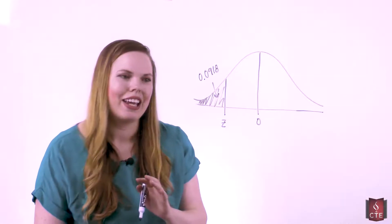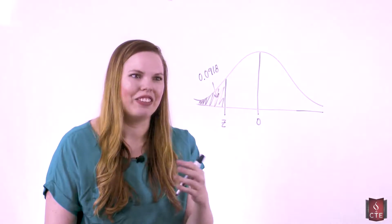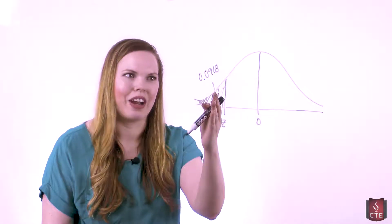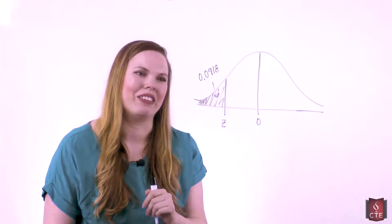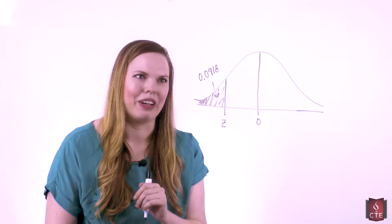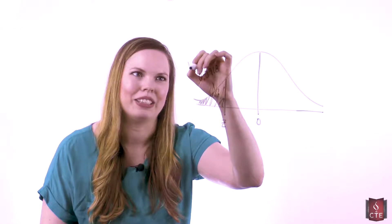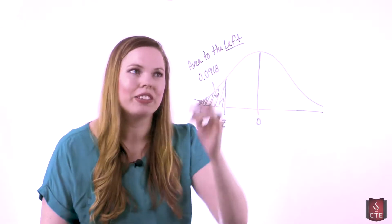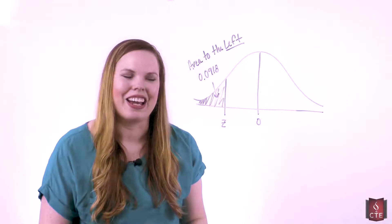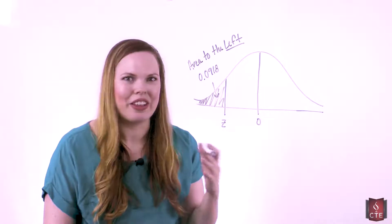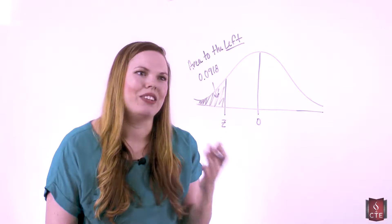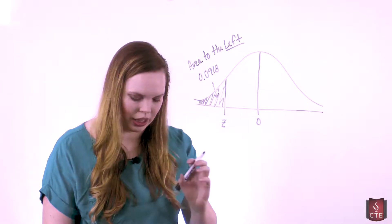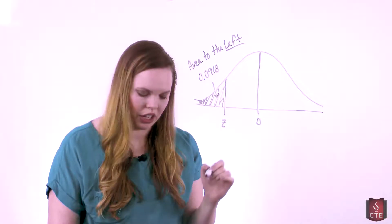We're working backwards to find that z. The first thing we do is determine whether we want the area to the left or to the right, and figure out what we're given — are we given the area to the left, or the area to the right? In this case, we're clearly given the area to the left, which makes our life easier because the values in the table are areas to the left, so there's no having to subtract from one. We can go straight to the table, looking in the body of the table for 0.0918.